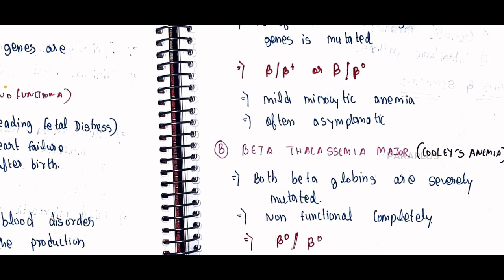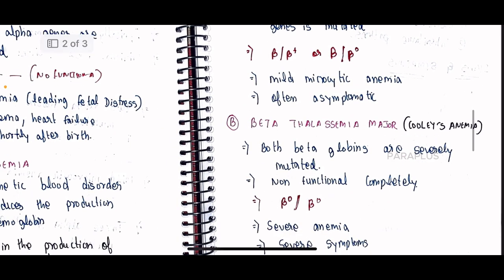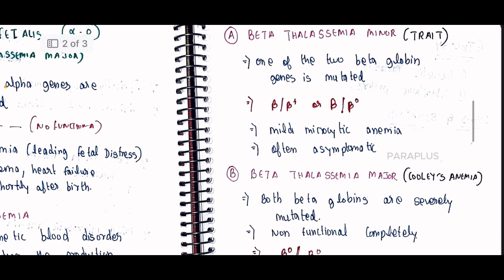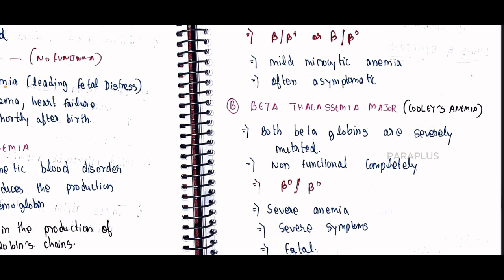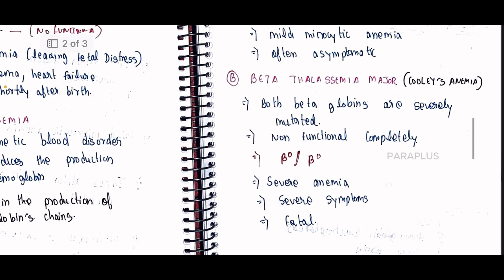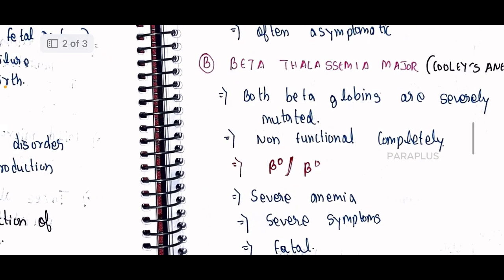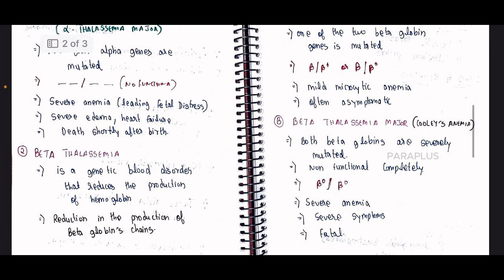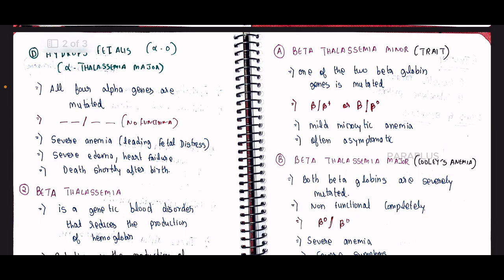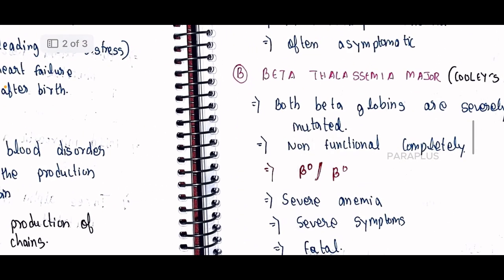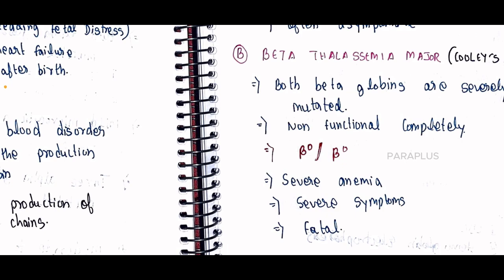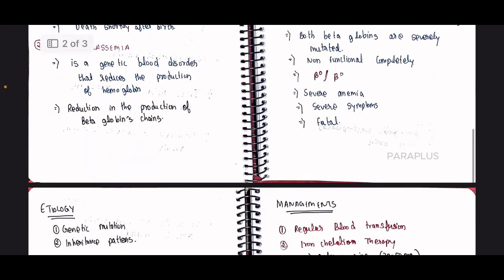Beta thalassemia minor presents with mild symptoms and microcytic anemia, and is often asymptomatic. Beta thalassemia major, also known as Cooley's anemia, is the severe form where both beta globin genes are missing or mutated, causing severe anemia and severe symptoms.